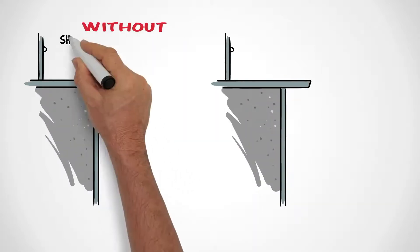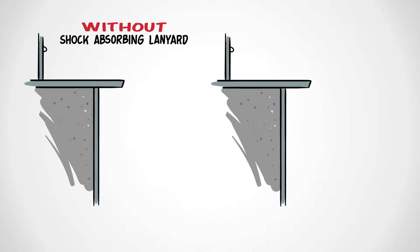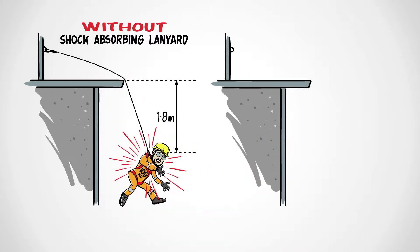Working at height without a shock absorbing lanyard can be potentially fatal. If a 100 kilogram person falls 1.8 meters without a shock absorbing lanyard, their body would be subject to 22 kN of force, just under 4 times the allowable limit.